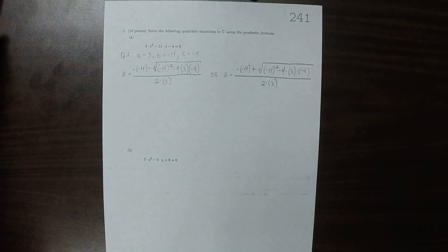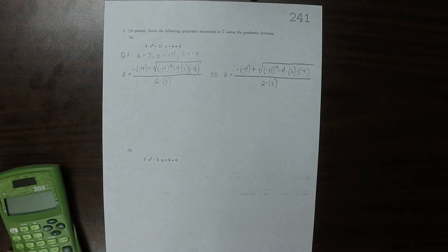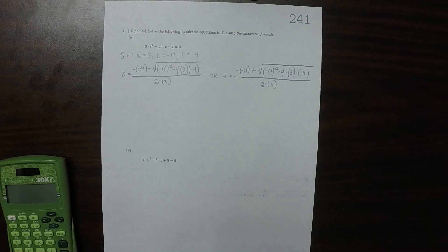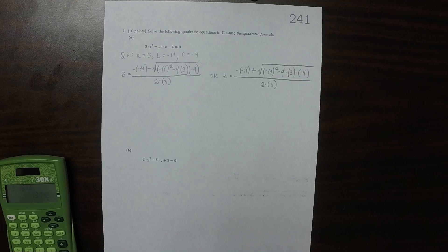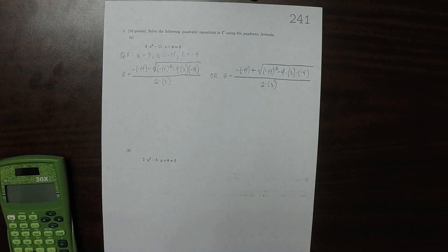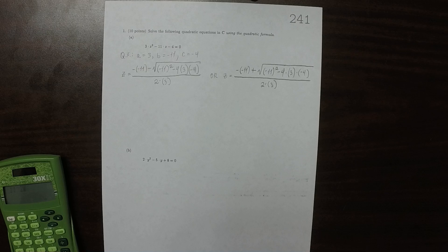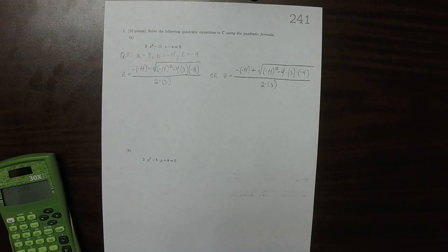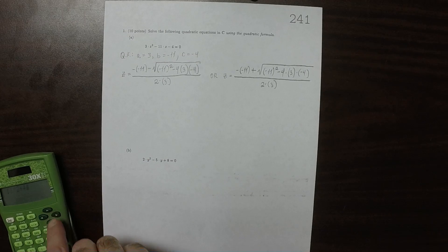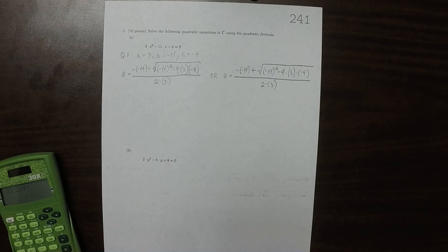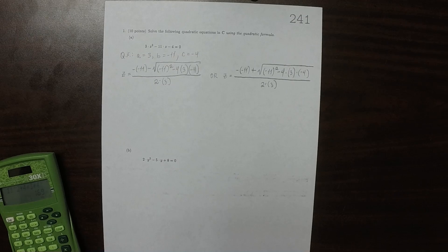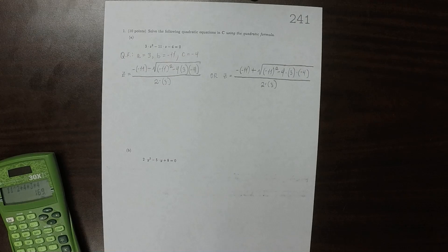So the discriminant, the thing in the radical, that looks like calculator work to me. So, 11 squared minus 4, it'd have to be plus because the negatives will cancel, 4 times 3 times 4. So that'd be 169.